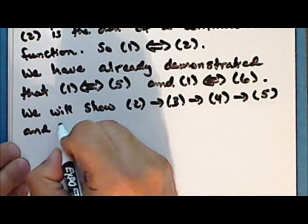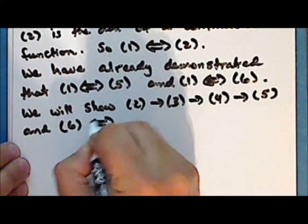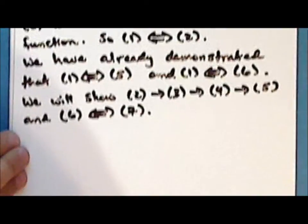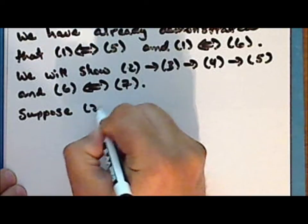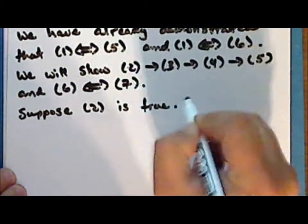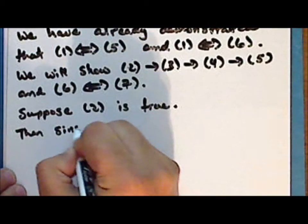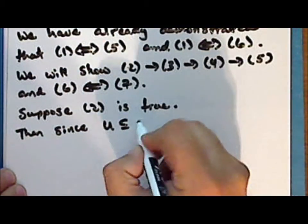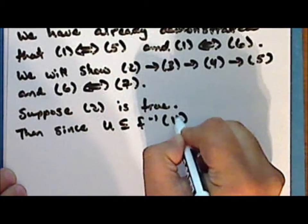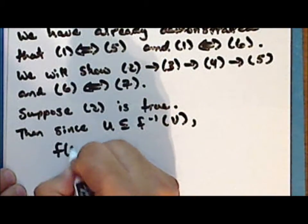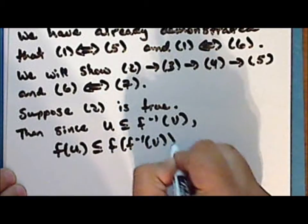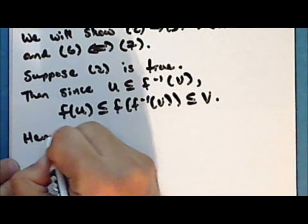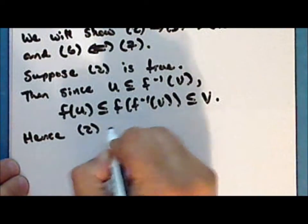Statement 6 is true if and only if statement 7 is true. Now suppose that statement 2 is true. Then, since the set U is a subset of the inverse image of the set V, we have that the direct image of U is a subset of the direct image of the inverse image of the set V, which in turn is a subset of the set V. Hence statement 2 implies statement 3.